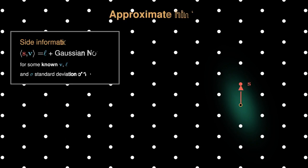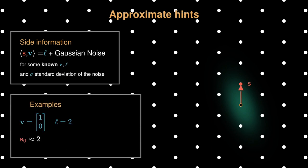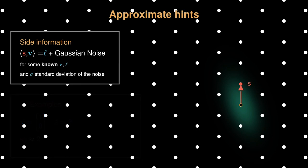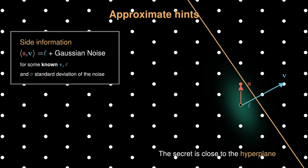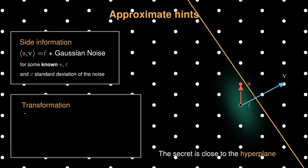The third type of hint is approximate hint. For a simple example, if the attacker learns the first coordinate of the secret is around 2, then this is a good case to use approximate hint. For the geometric intuition, given a vector v, we draw a same hyperplane as we did in perfect hint. However, since we only know this inner product value up to some error, the secret may not be on the hyperplane, but it is close to the hyperplane.